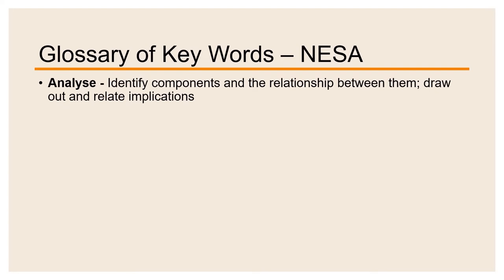The first one we're going to look at is analyse, which is to identify components and the relationship between them, to draw out and relate implications. To break that down, the first part asks us to identify components. Now identify is itself a keyword from the glossary, and to identify means to recognise and name. It's important that we know the correct names for the things that we are talking about so that we can use more technically specific language and get more information across in our analysis with fewer words.